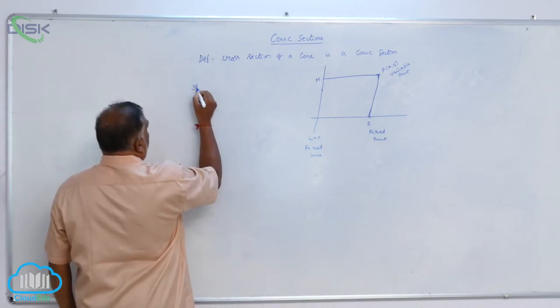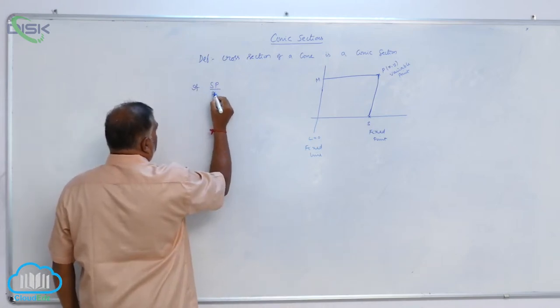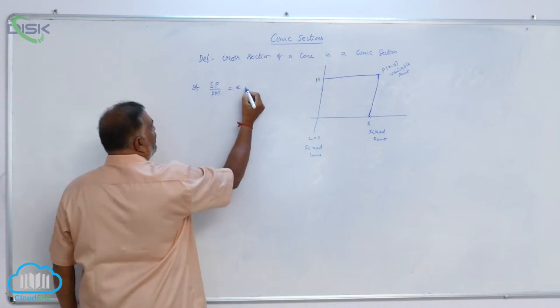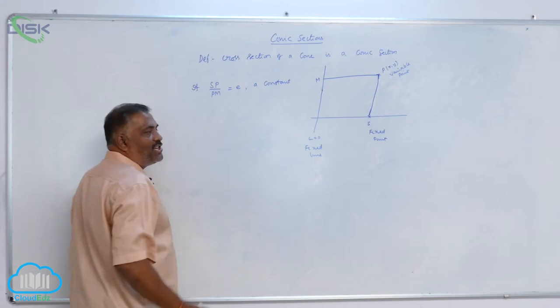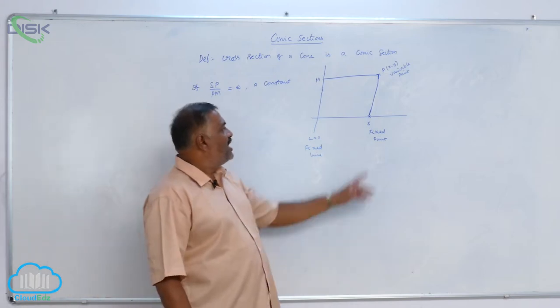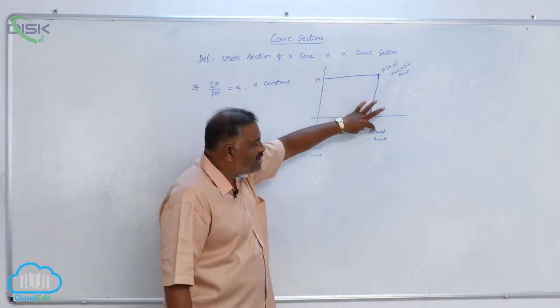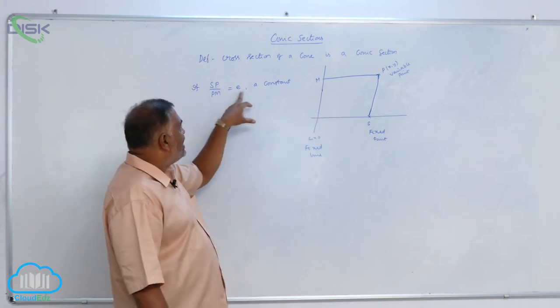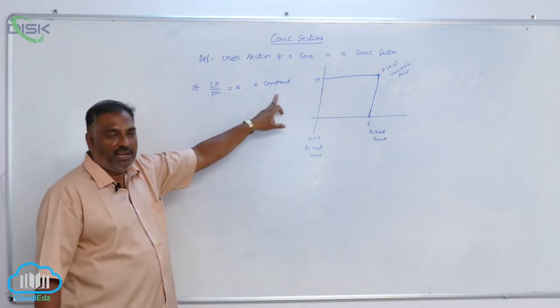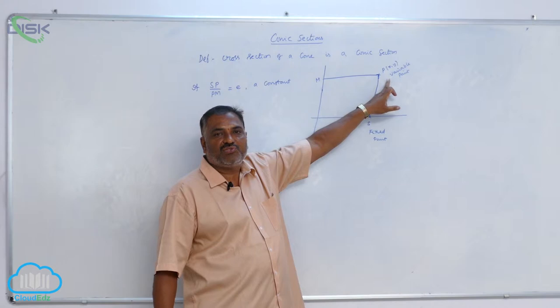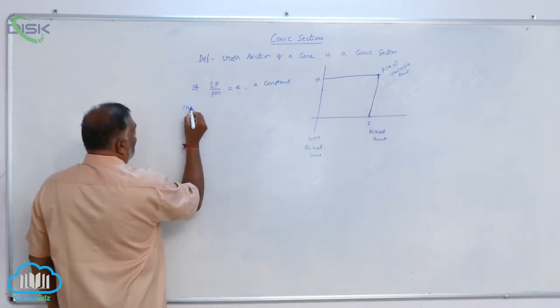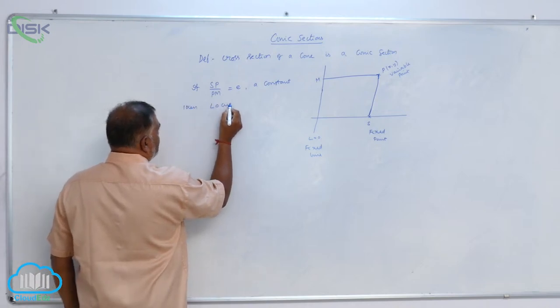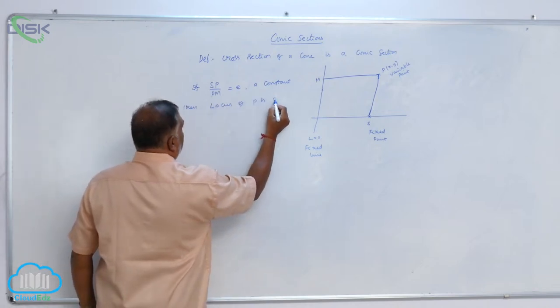Now, if SP by PM is equal to E, a constant, that means the ratio of distances from a fixed point and fixed line is a constant. Then, collection of all such points P, that is, locus of P. Then, locus of P is a conic.